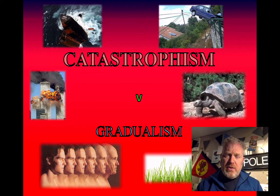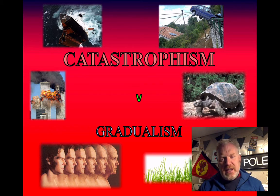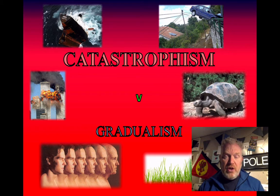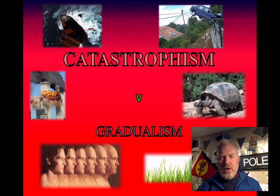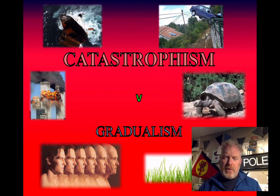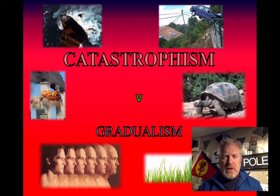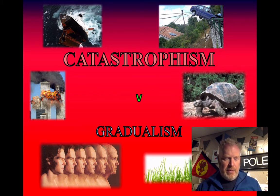In this lesson we need to talk about timescales, and particularly how long it takes for rock cycle processes to actually occur. We've been talking a lot about the rock cycle and the different parts of it, but we need to think about how quickly they happen. Geologists have two approaches to this: what we call catastrophism and gradualism, and we need to explore these ideas in more detail.